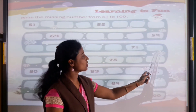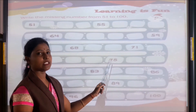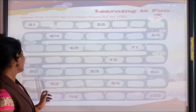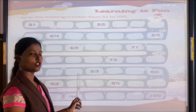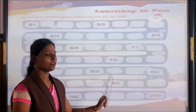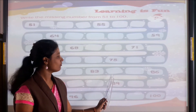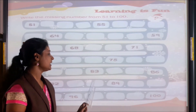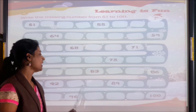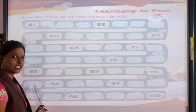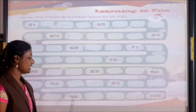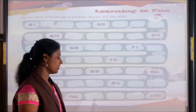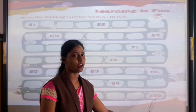So you will write 72, 73, 74. Then 75 is given here, so you will write 76, 77, 78, 79. Then 80 is written here, so you will write 81, 82. Then 83 is written here, so you will write 84, 85. Then 86 is here, so you will write 87, 88, 89. After 89 what will come? 90, 91. Then 92 is here, so you will write 93, 94, 95. Then 96 is here, so you will write 97, 98, 99. Then 100 is given here.